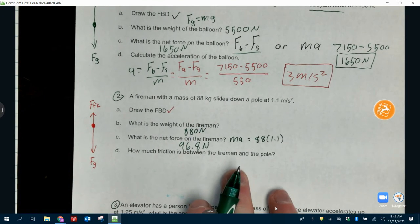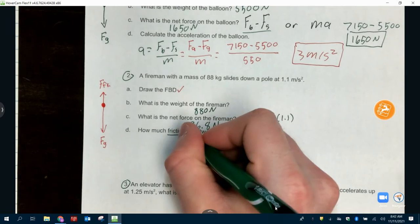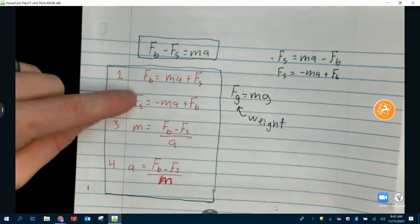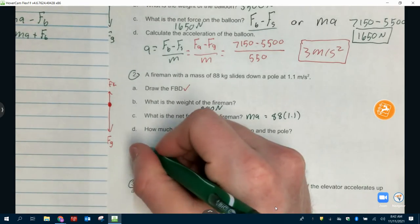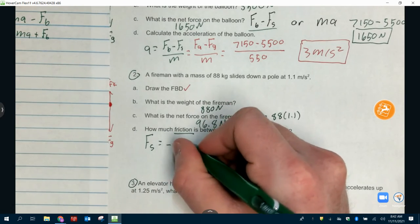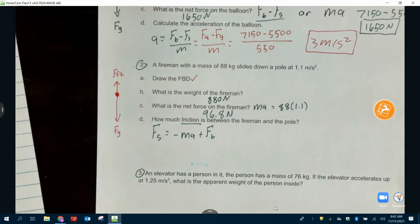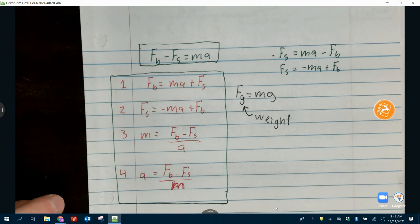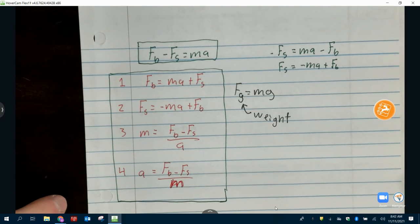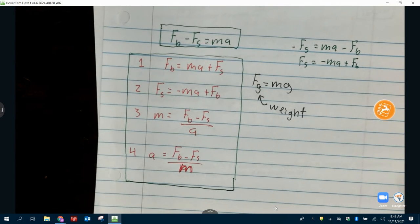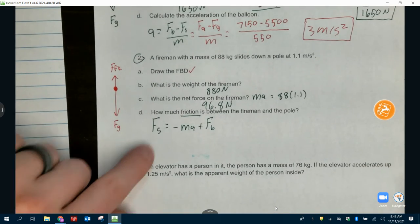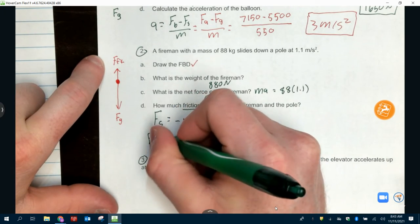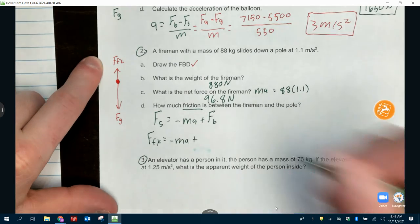How much friction is between the fireman and the pole? So, is the friction big force or small force? Small force. Small force. So, we're going to use the equation that's solved for small force. F_S equals negative M-A plus F_B. Go back to the little bit of your group. Negative M-A plus F_B. Yeah. F_S. So, what's our small force? Friction.